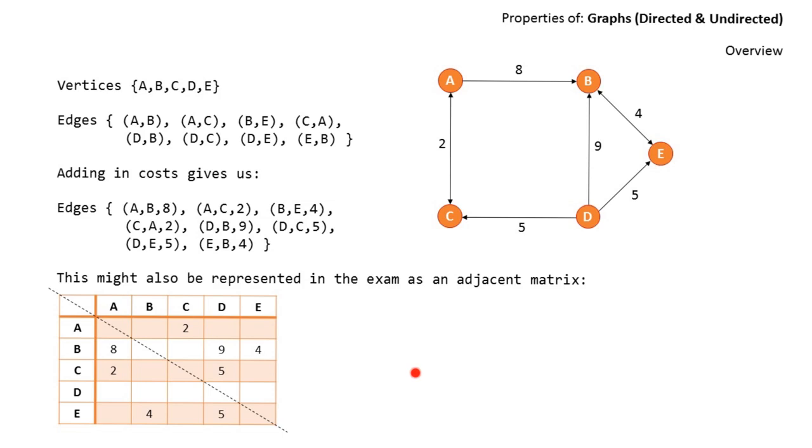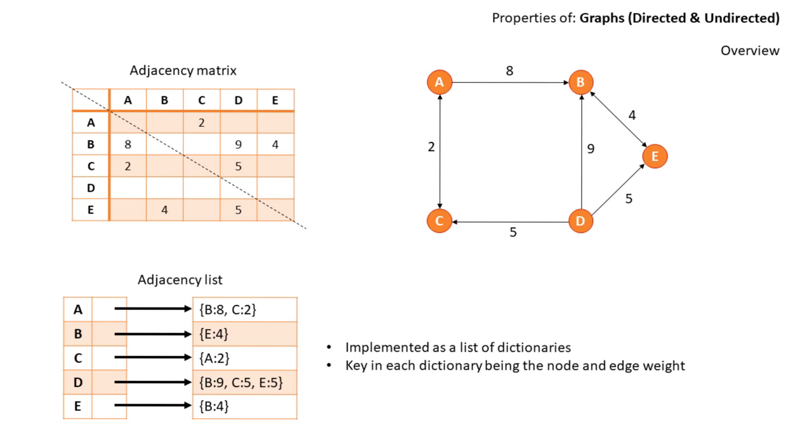Now, this adjacency matrix is only one way of representing our graph. Another method you have to be familiar with is the idea of an adjacency list. In this situation, we list all the vertices or nodes. There are several ways of implementing this. Here is a typical way where we implement a list of dictionaries. The key in each dictionary being the node and the edge being the weight. So I can see here that node A links to B with a cost of 8 and node C with a cost of 2.